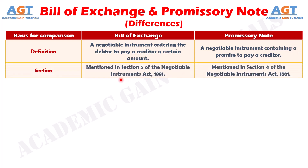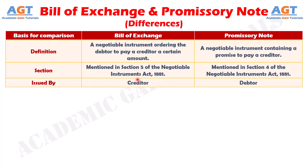Number two: A Bill of Exchange is mentioned in Section 5 of the Negotiable Instruments Act, 1881, whereas a Promissory Note is mentioned in Section 4 of the same Act. Number three: A Bill of Exchange is issued by a creditor, whereas a Promissory Note is issued by a debtor.